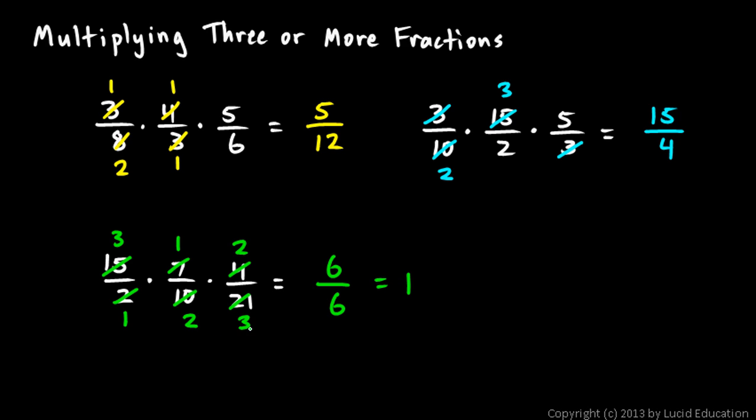But look, this could reduce to one even before we do this step. You could take this three and this three and reduce those to ones, and you could take the two and the two and reduce those also. You end up with 1 × 1 × 1 over 1 × 1 × 1. And of course, either way you do it, you get the same answer.